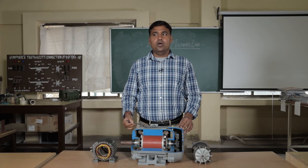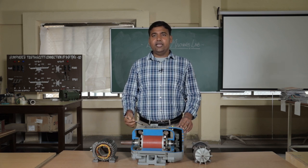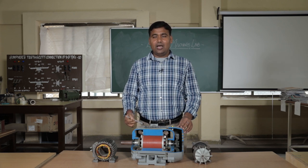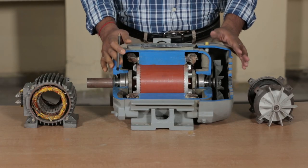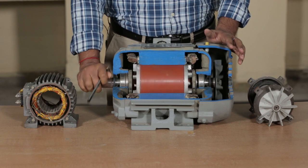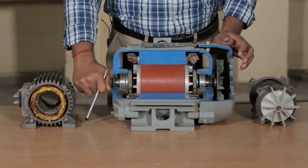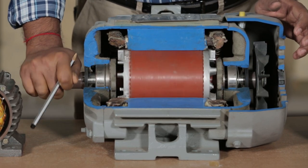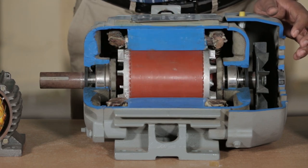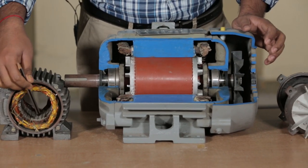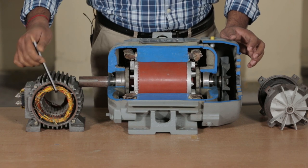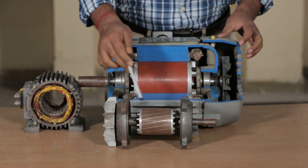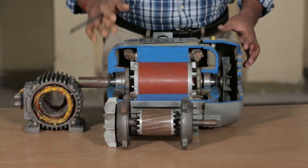This is the cutout section of a three-phase induction motor. In any AC motor, there will be a stator and a rotor. The stator is the stationary part and the rotor is the rotating part. The revolving part connected with a shaft is the rotor. The winding present in the poles which is stationary is the stator. This is the full three-phase induction motor, showing the cutout section of the rotor and stator coils.